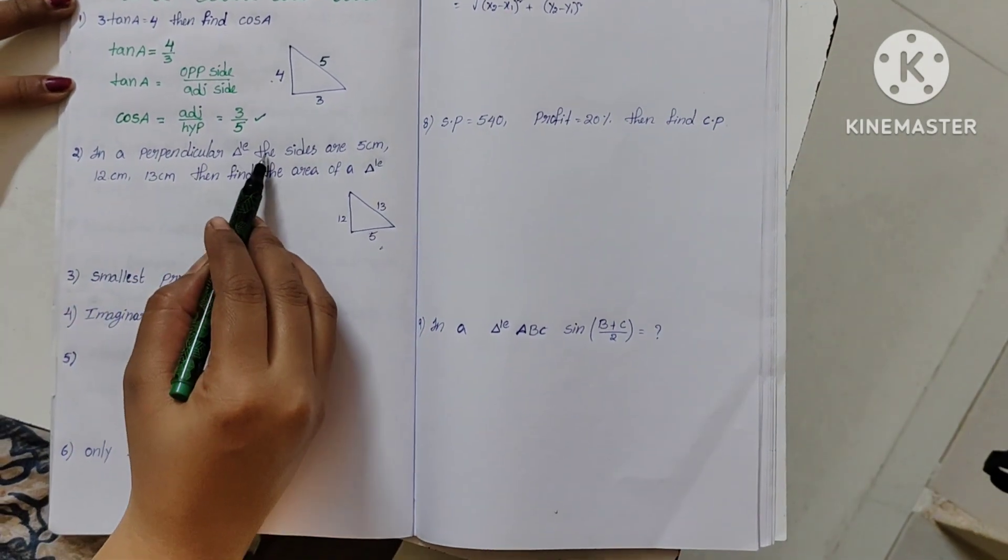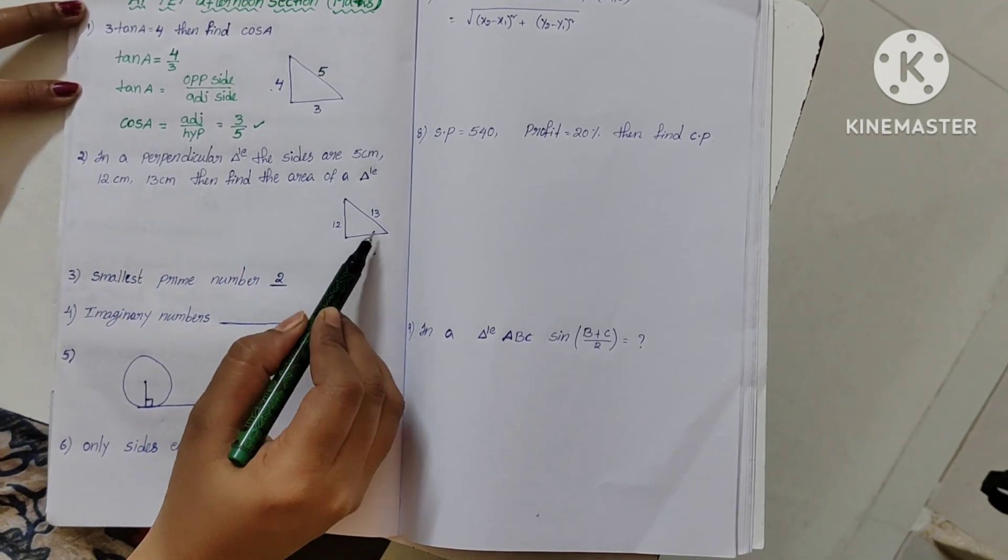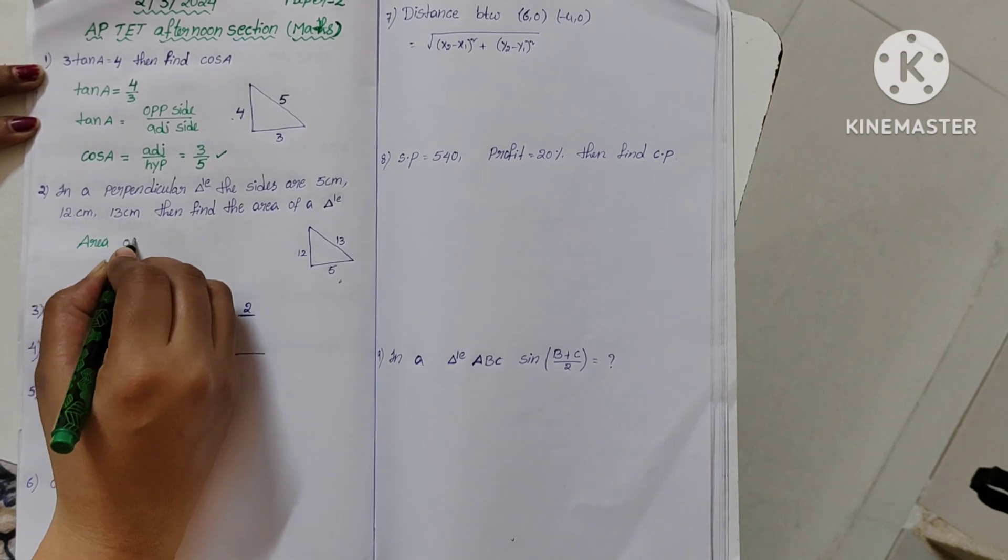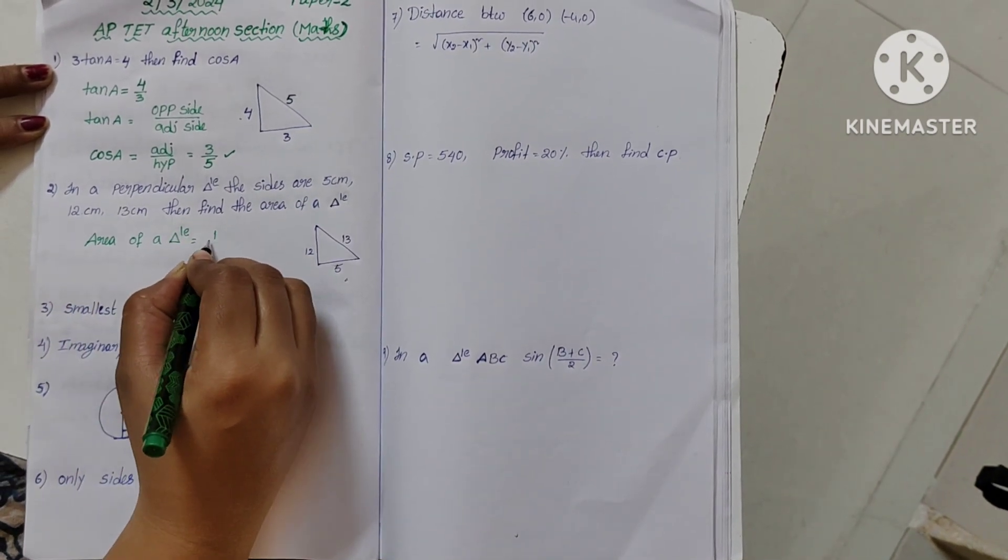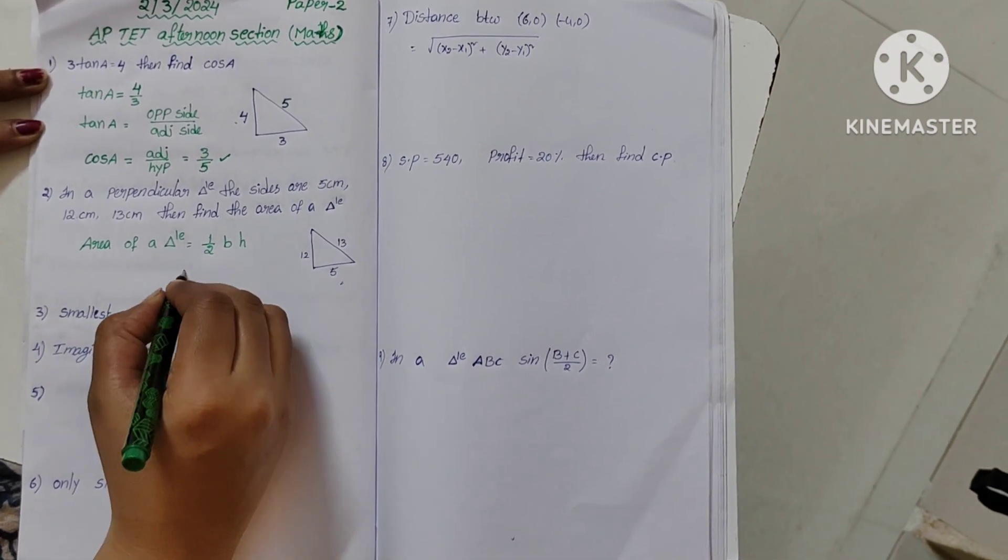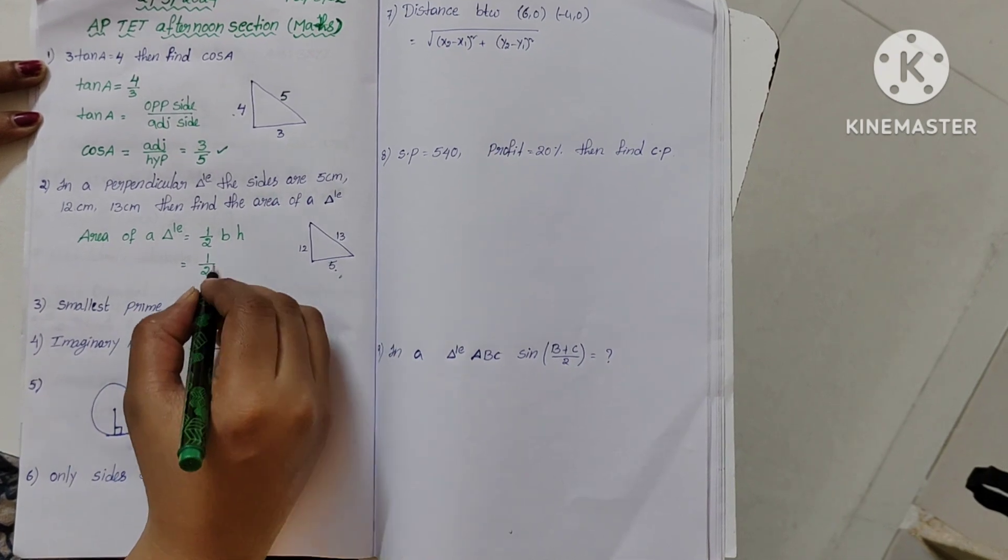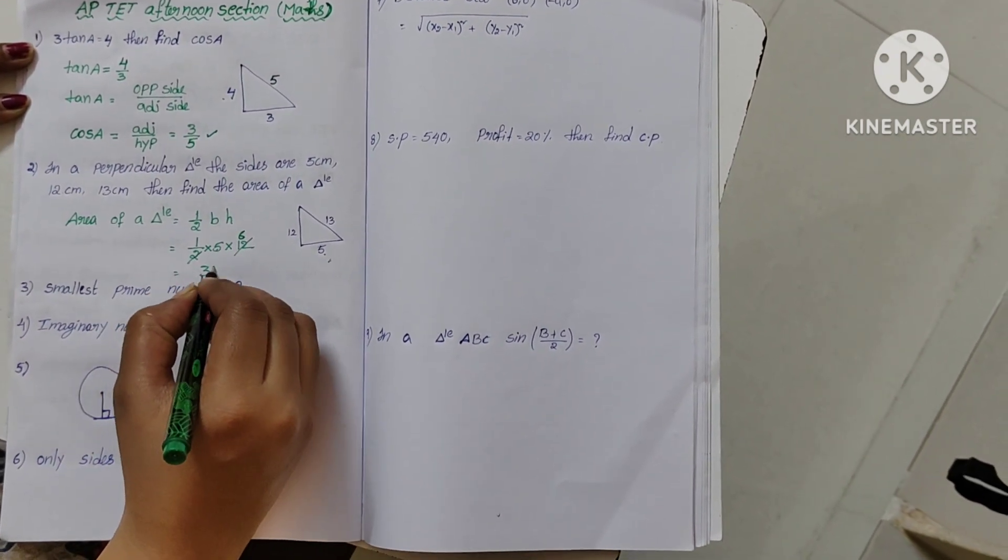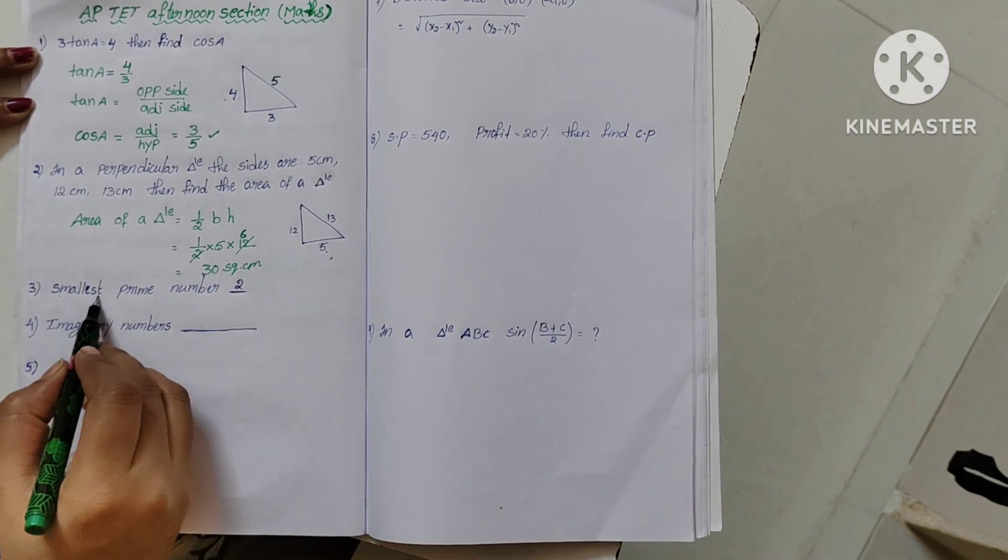Now 3 by 5 is the answer. In a perpendicular triangle, the sides are given, then find the area of the triangle. The formula is half base into height. Now half of base 5 and height 12. So 12 times 6 times 5 is 30 square centimeters.